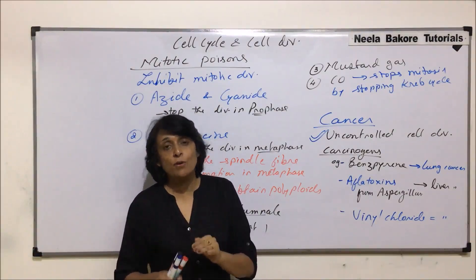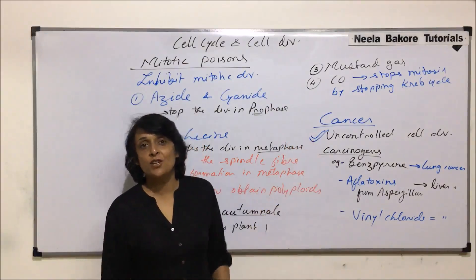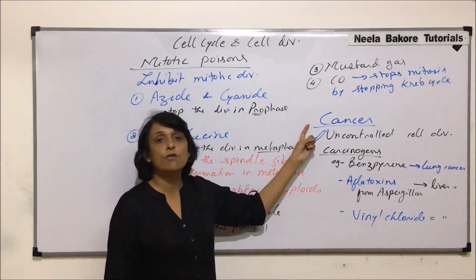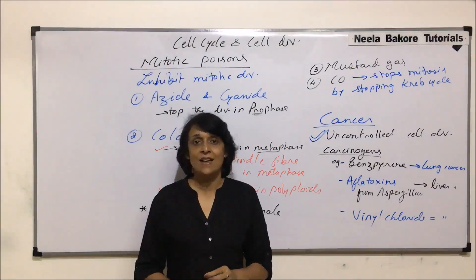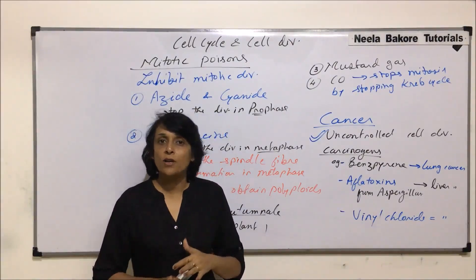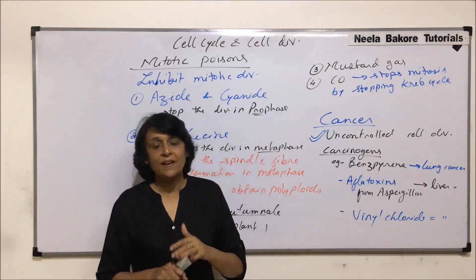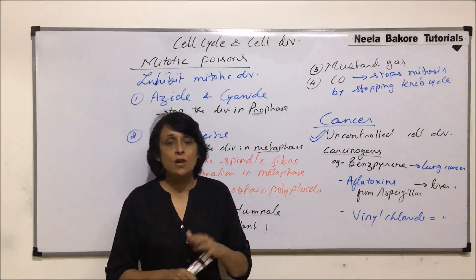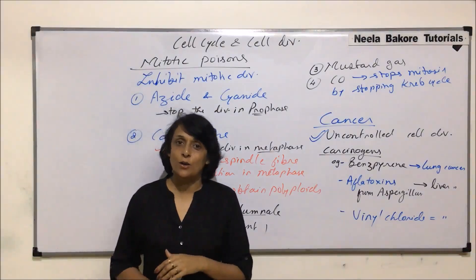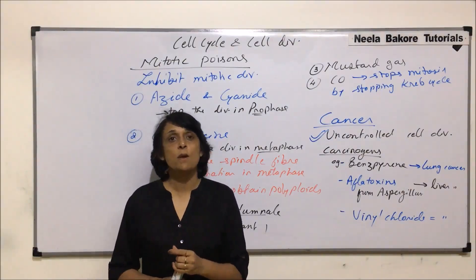Mitosis plays a very important role in growth, repair, regeneration, and reproduction in lower organisms like vegetative propagation. But if this division loses control, the same division is also responsible for the condition known as cancer. With this, we are done with the complete mitotic division — we have seen all the stages, their significance, mitogens, mitotic poisons, and what happens when division becomes uncontrolled. From the next video, we will start with the next division, that is meiosis.